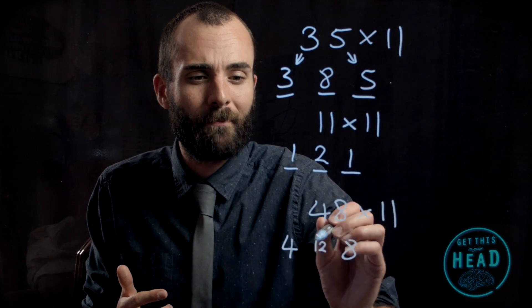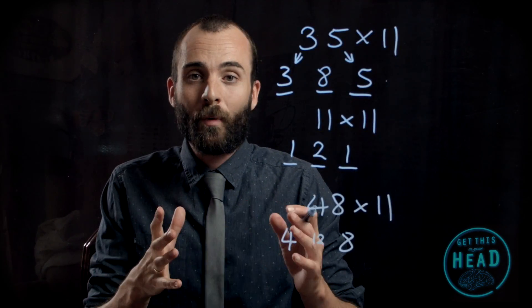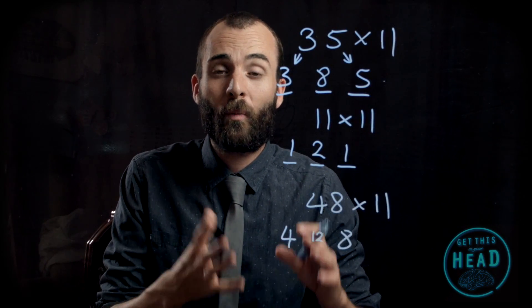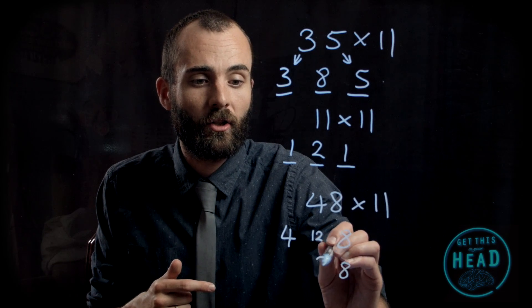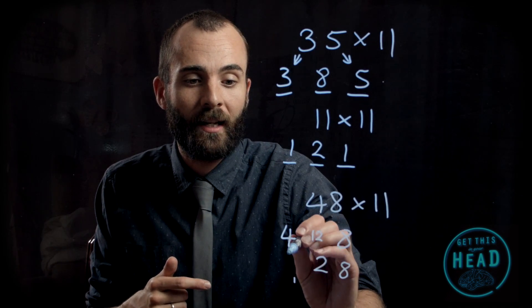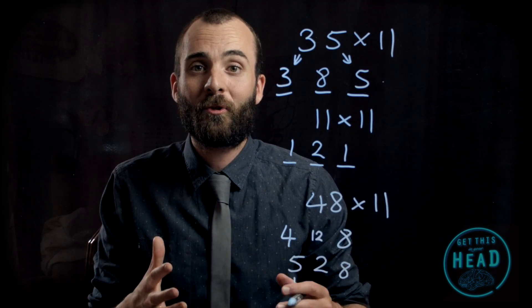12 is going to go in the middle, but that doesn't quite work—that's not a three-digit number. What we do is keep the 2 and carry the extra 10 over. So that's going to become 8, 2, carry the 1, that becomes a 5. So 48 times 11 is 528.